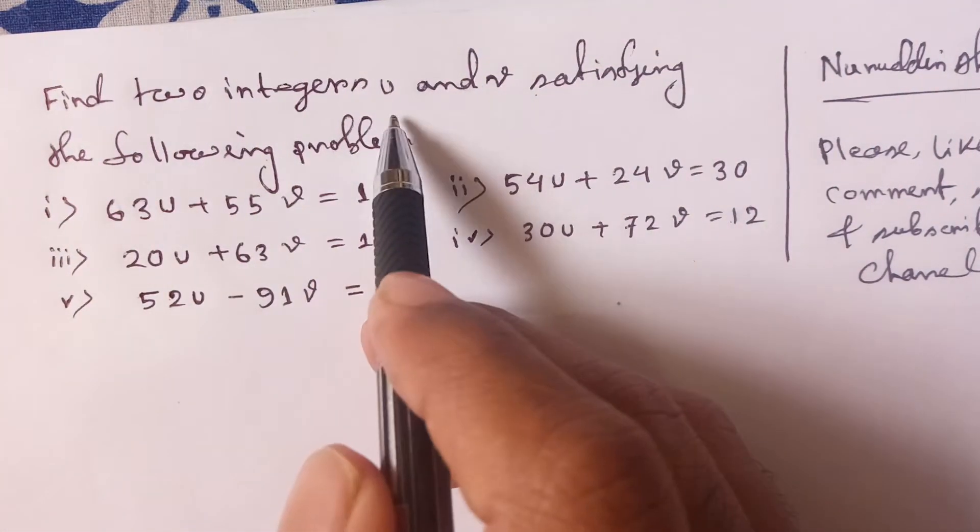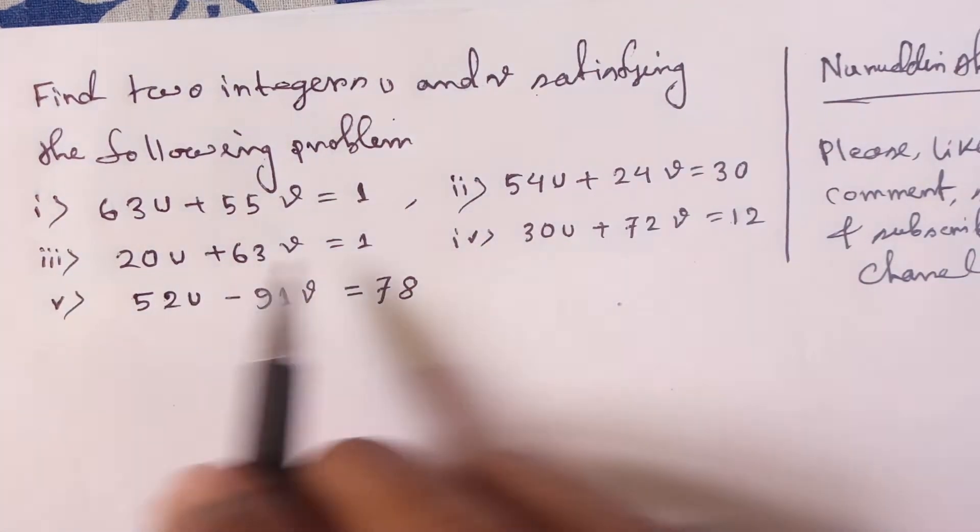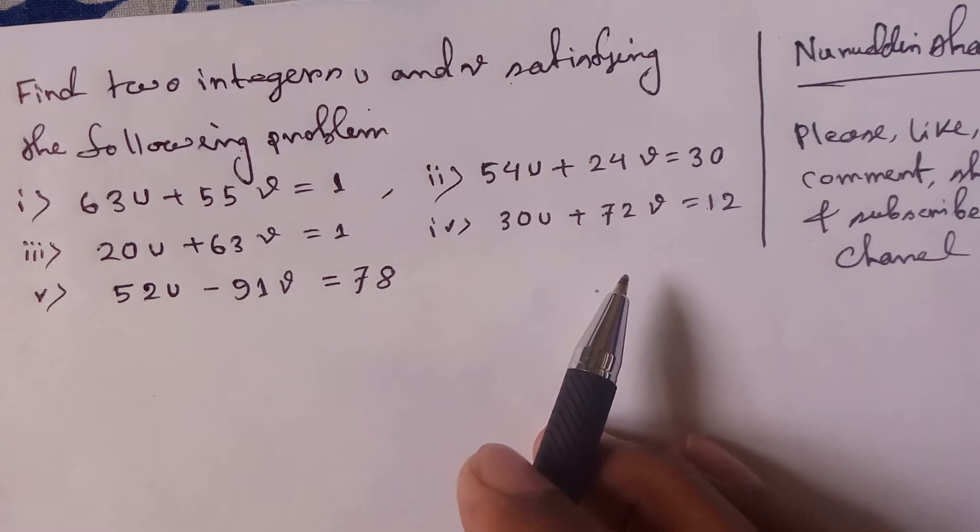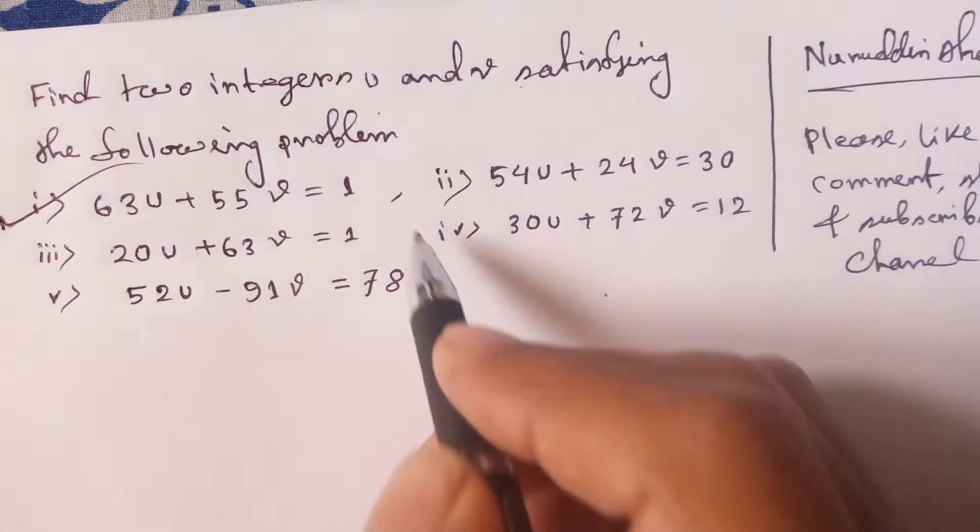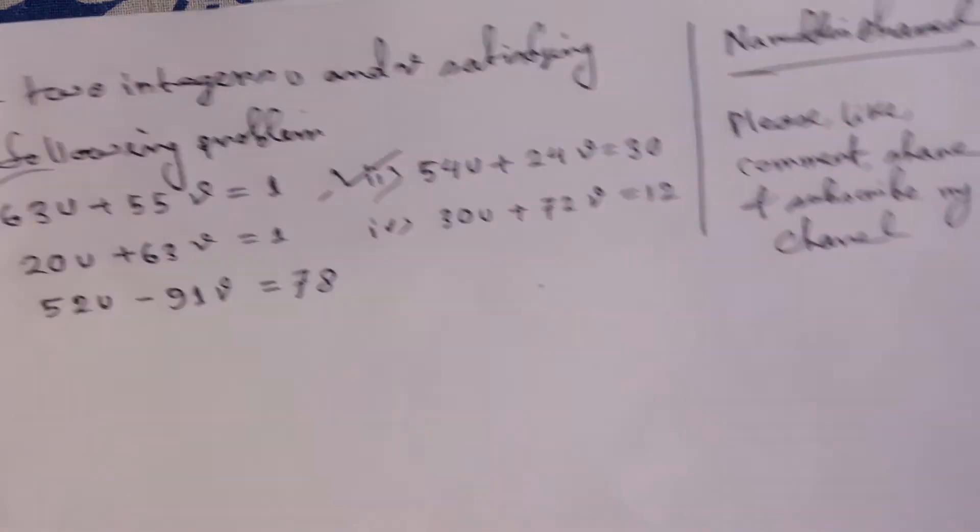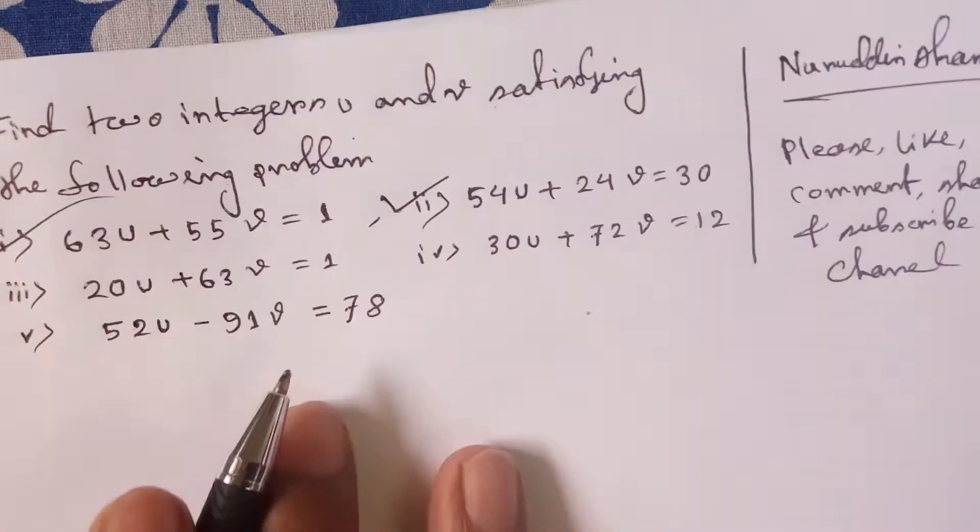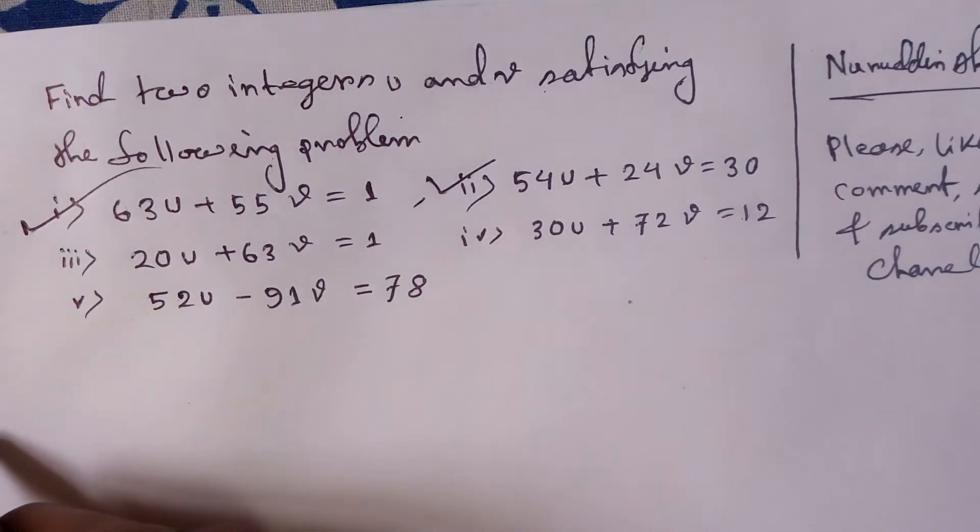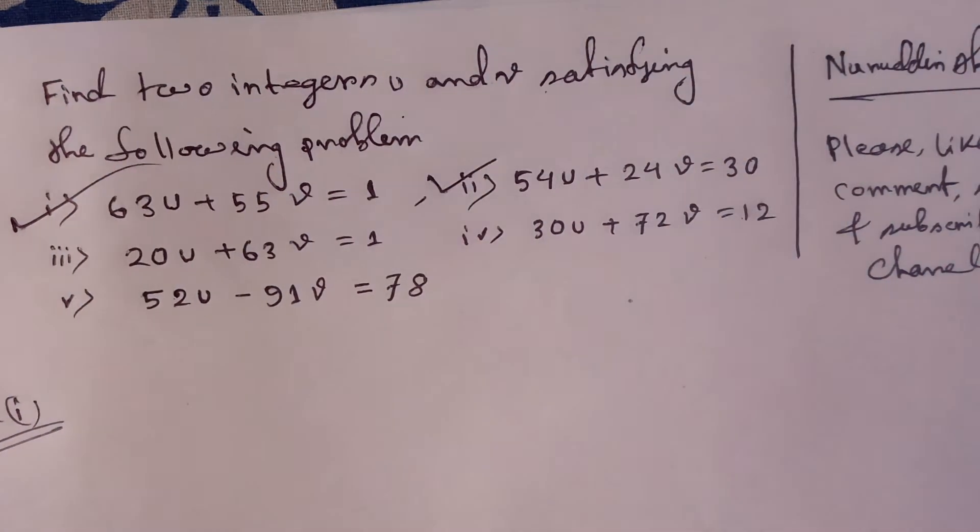Find two integers u and v satisfying the following problems. Problems one, two, three, four, five are given. Now we'll solve two problems - this and this. These are homework. Now for problem one solution.